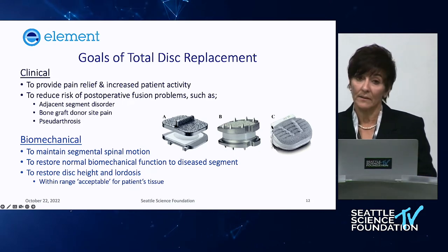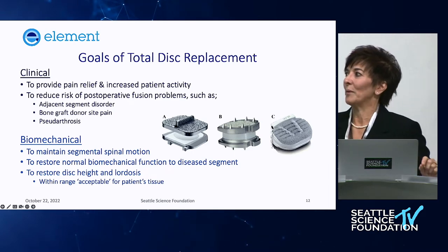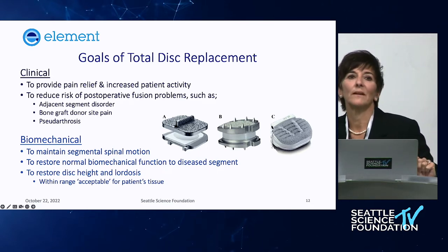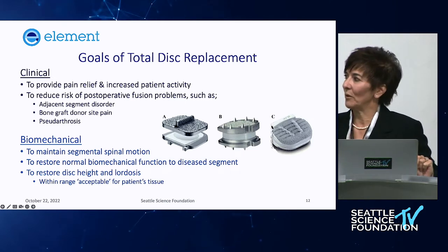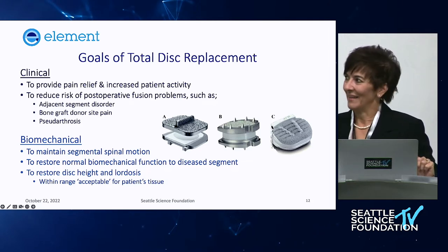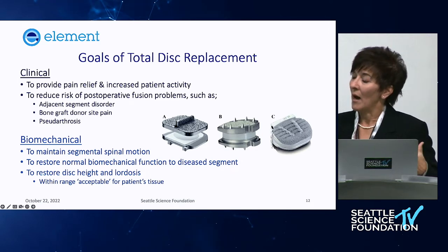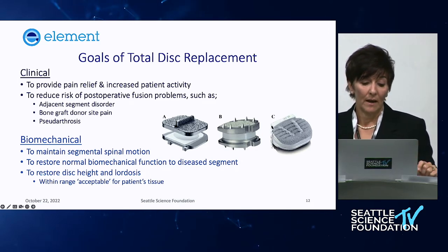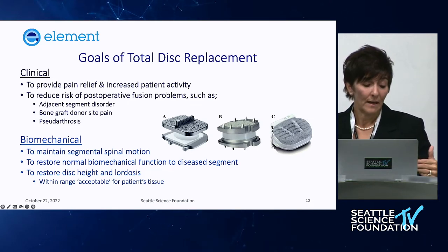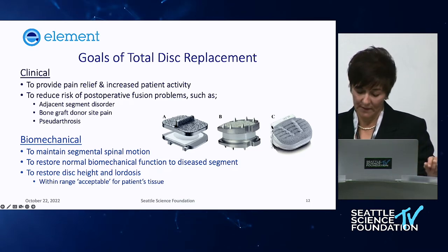From a biomechanical standpoint, we want to maintain segmental spinal motion — and that's patient-dependent. It's tough to take a 75-year-old patient and make their disc like it was at 25. Tissue adapts for a reason. We want to restore normal biomechanical function to the diseased segment, restore it appropriately for that patient, and restore disc height and lordosis.